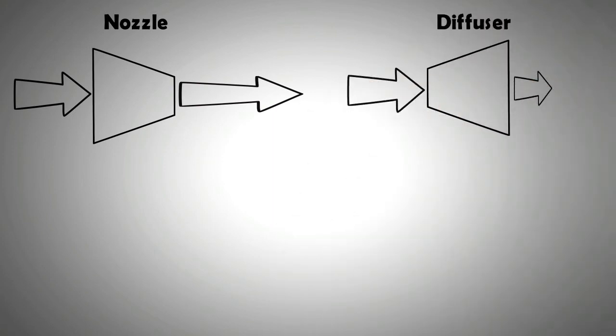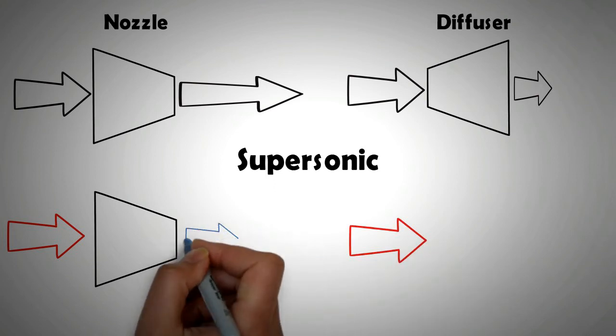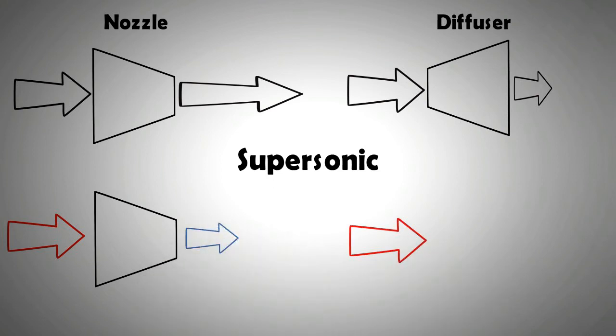If, however, the flow entering the nozzle is supersonic to begin with, then instead of further speeding up the flow, the nozzle actually slows it down. On the other hand, let's consider a diffuser. If the flow at the inlet is supersonic, its speed would further increase as it comes out of the diffuser.